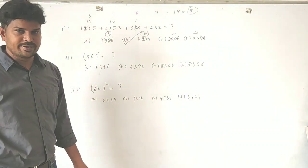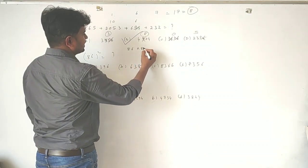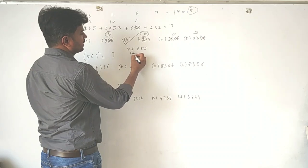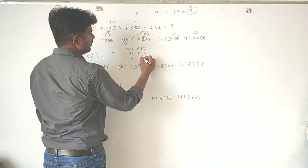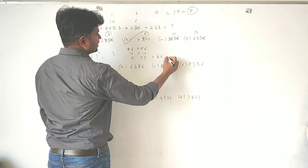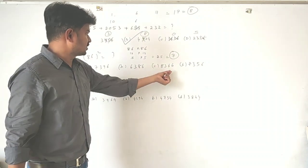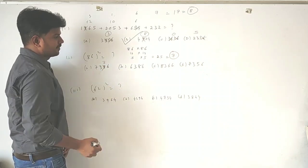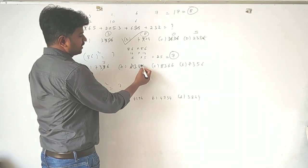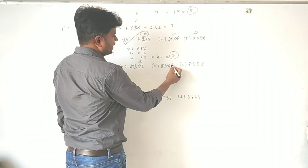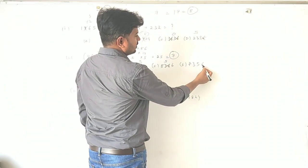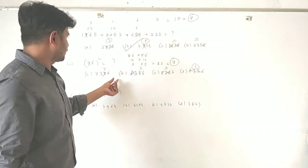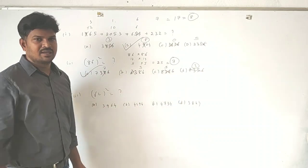Let's move to an example of finding squares. 86 times 86 is nothing but 86 squared. What is the digital sum of 86? It is 8 plus 6 equals 14, and 14 gives 1 plus 4 equals 5. Similarly, the other 86 also gives 5. So 5 times 5 is 25, and the digital sum of 25 is 7. From the options, check which option has digital sum 7 — ignore 9s, check sums. Only the first option, A, has digital sum 7. So the answer is A. Like this, you can cross-check.